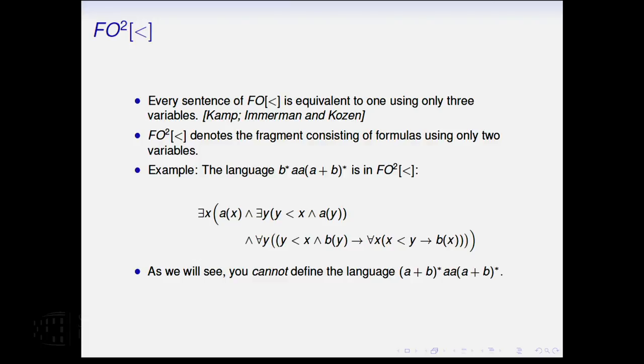This result actually appears in Kemp's work on propositional linear temporal logic because in translating from temporal logic into first-order logic, it's found that you only need three variables. There's a different proof by Emmerman and Kozen that uses model theoretic techniques. And we'll denote with this superscript two the fragment consisting of formulas where you only use two variables.